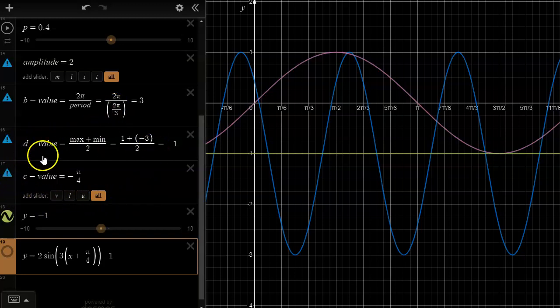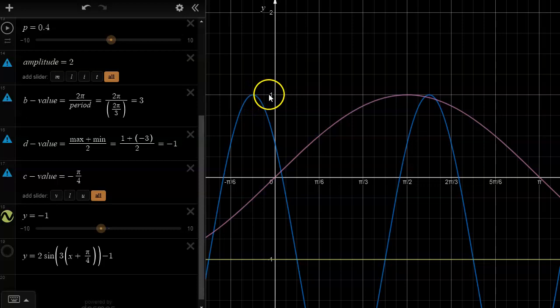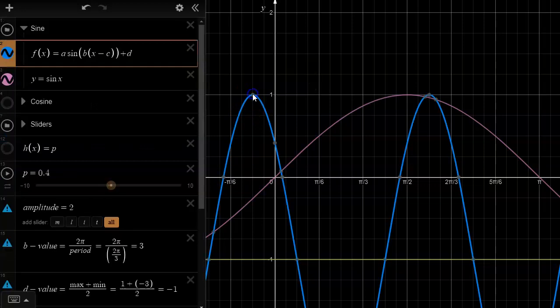The only difference is in the c value. The c value if we describe this as a cosine function does not rely on us looking along the median but relies on us looking at the maximum values. The closest maximum value to the y-axis is right here. It is two squares to the left of the y-axis. Four squares is pi over 6, so two squares is pi over 12, so negative pi over 12 would be the c value for a cosine function.